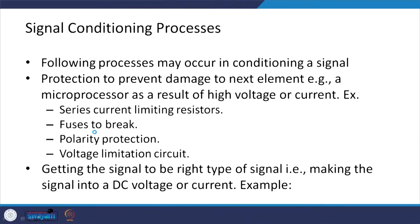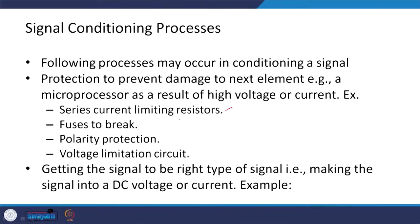Signal conditioning process may include the following: first, protection to prevent damage to the next element — that is the microprocessor — as a result of high voltage or current. This could be a series current-limiting resistor, normal fuses to break, polarity protection, or a voltage-limiting circuit.